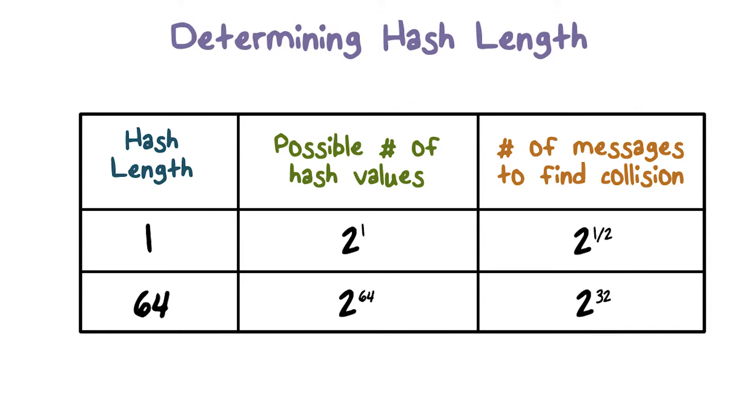If we have square root of 2 to the L, that is 2 to the L divided by 2 messages, then there's a 50% chance that two of them will have the same hash value.